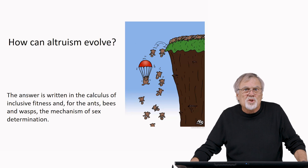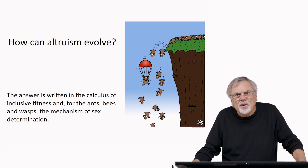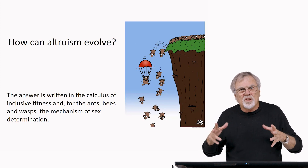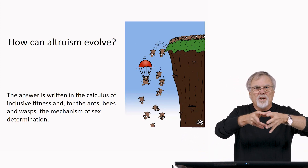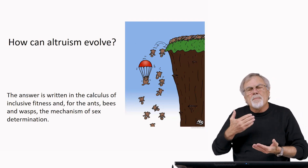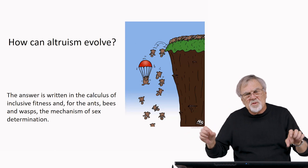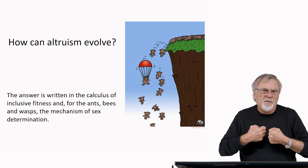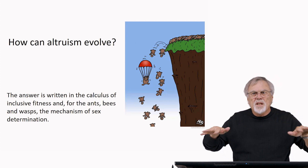The answer to the evolution of altruism is written in the calculus of what we call inclusive fitness. And for the ants, bees, and wasps, the mechanism of sex determination is one of the key features of their particular calculus that has allowed the Hymenoptera — that's the ants, bees, and wasps — to evolve very, very advanced social systems with very advanced degrees of altruism, multiple times in many different lineages.